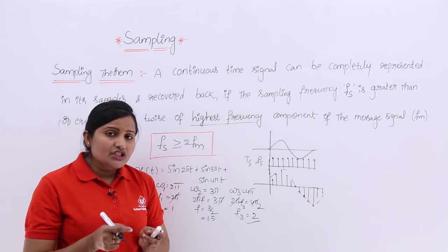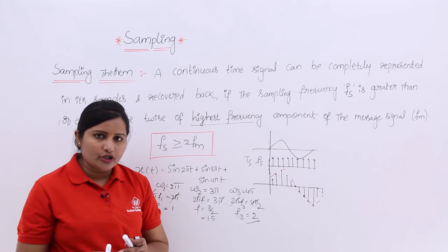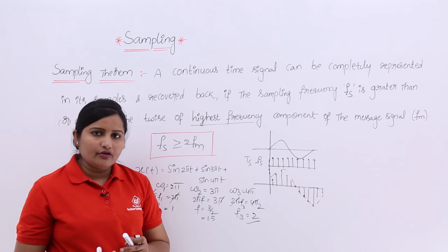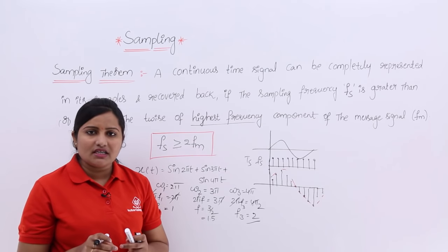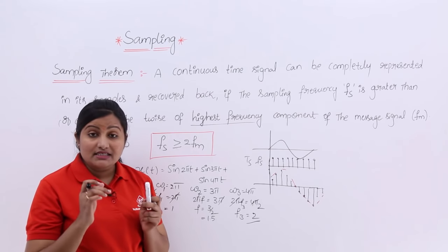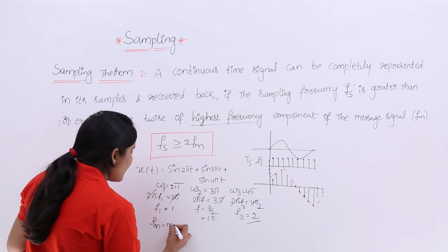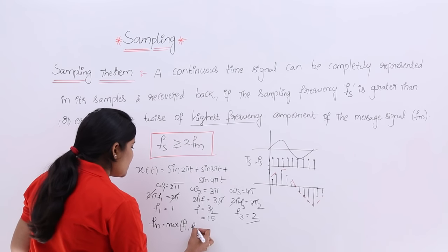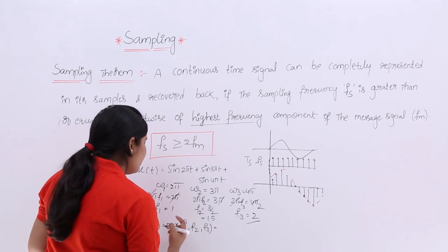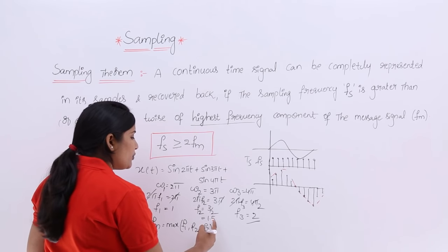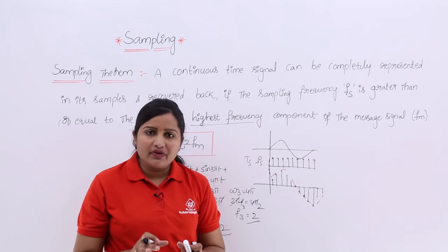Which component do you consider as the message frequency? Whatever the highest frequency component is — that is considered as the message frequency fm. So fm = max(f₁, f₂, f₃) = max(1, 1.5, 2) = 2 Hz. So fm = 2 Hz in this case.